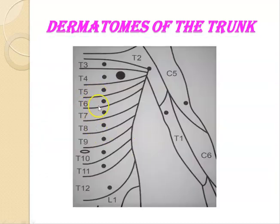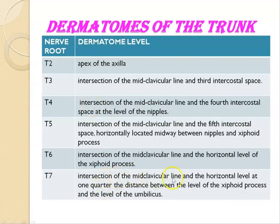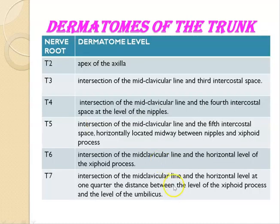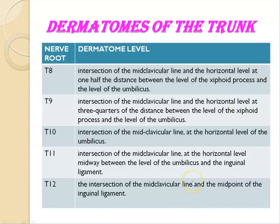T7 is at the intersection of the midclavicular line at the horizontal level of one quarter of the distance between the xiphoid process and the umbilicus. T8 lies at the intersection of the midclavicular line at one half of the distance between the xiphoid process and the level of the umbilicus.